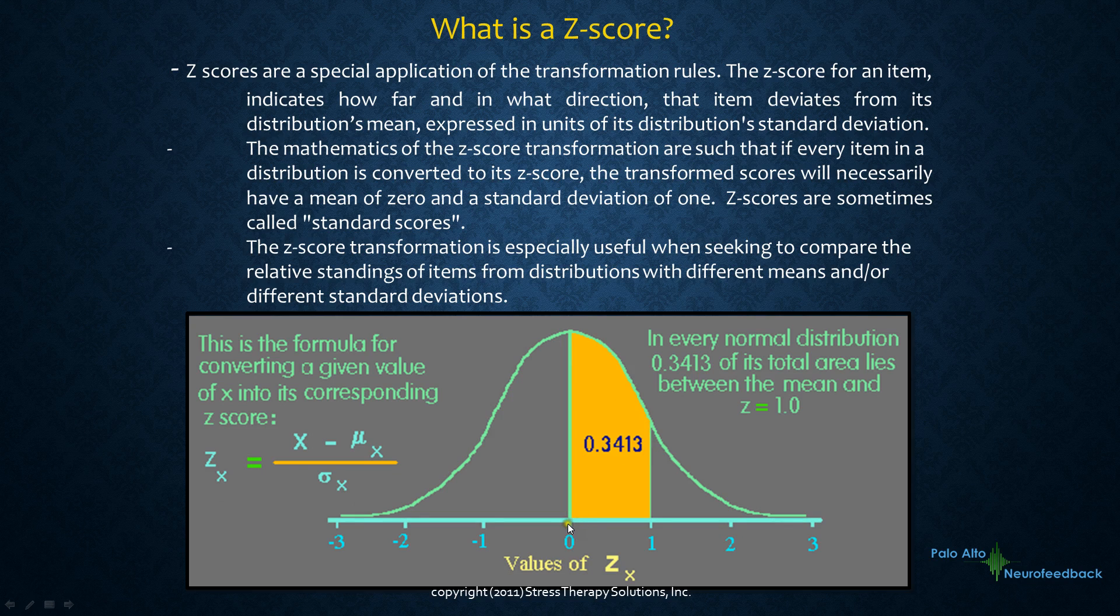So at the middle of that will be zero and that will be the mean of the distribution. A z-score of one means that it's 34.13 percent above the mean. A negative z-score is negative 0.3413 from the mean. When you come out here again, it's another 34.13 percent.